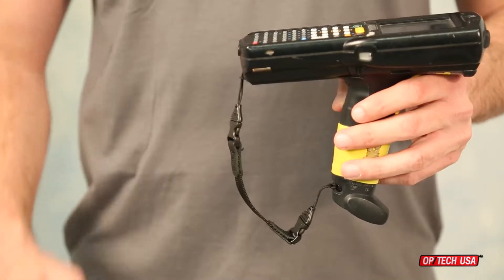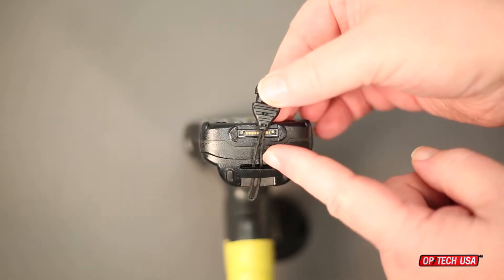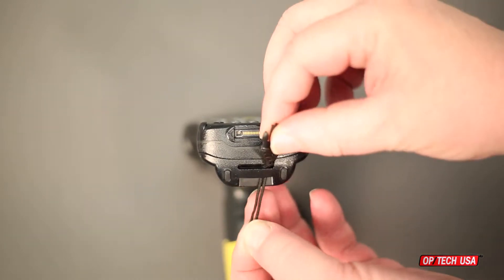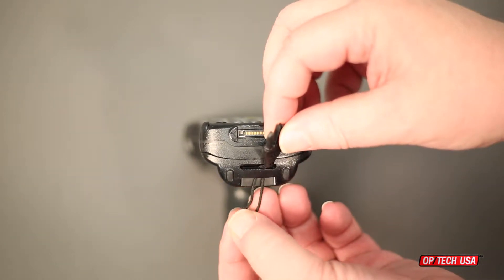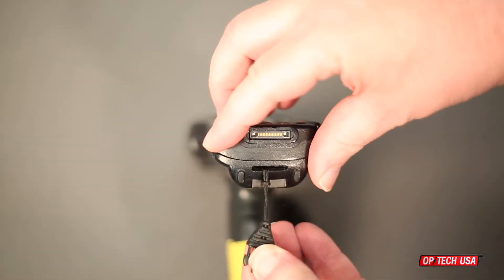The scanner hook adapter creates a loop between the scanner's handle and body. To attach the mini cutie loops to the scanner, simply pass the loop portion of the connector through the scanner strap connection area, then pull the plastic connector through the loop and pull it tight to complete the knot.